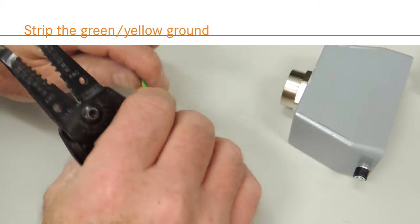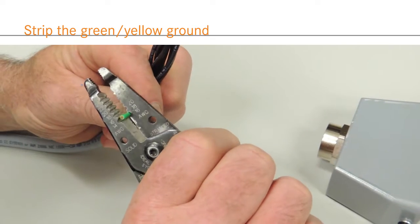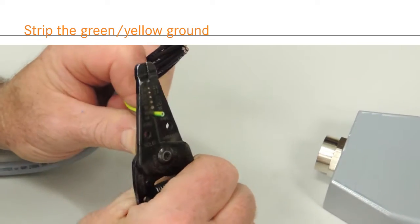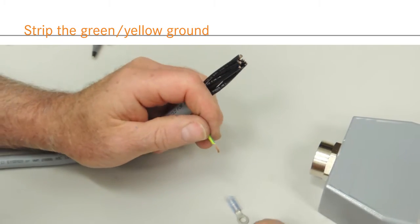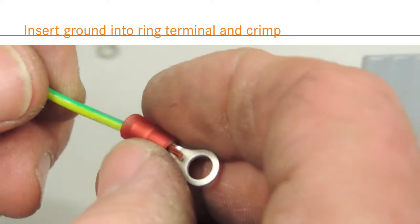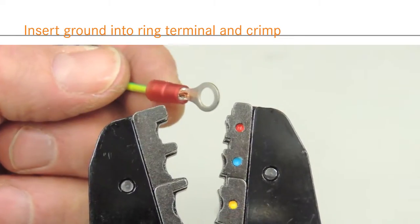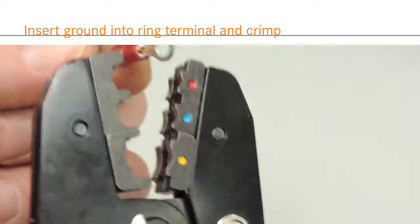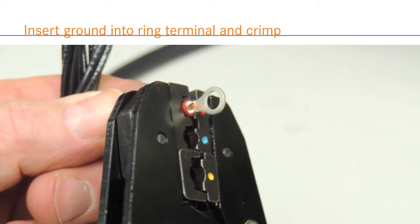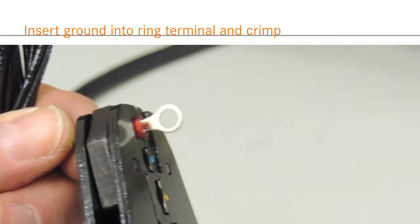To terminate the green-yellow cable ground, measure against the ring terminal and strip the wire 3 eighths of an inch. Insert the wire into the terminal. You should be able to see the stripped wire through the end of the ring terminal. If not, strip more of the insulation. Crimp the ground terminal with a crimp tool. There should be enough of the wire visible at the end of the terminal to ensure a secure crimp.